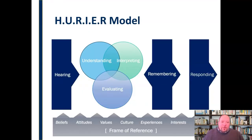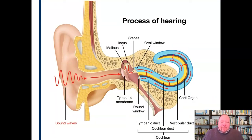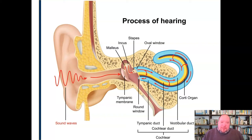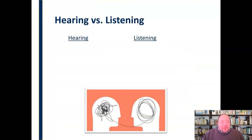The HURIER model starts with hearing and then moves through those other aspects. It's really hard to imagine listening without hearing. As we'll discuss, hearing and listening are not the same thing, but hearing is an important first part of the listening process. When we talk about hearing, we're really talking about that physiological process — when sound waves strike our eardrums and the whole physiological process that leads from that sound wave being translated into some sort of image, sound, or notion in our mind.